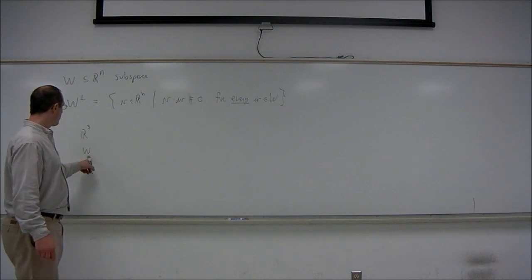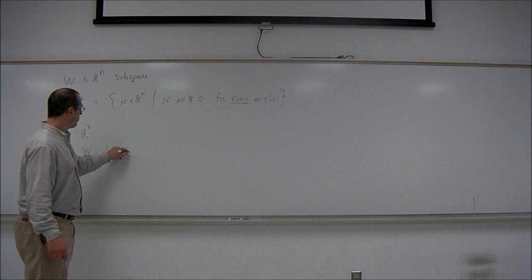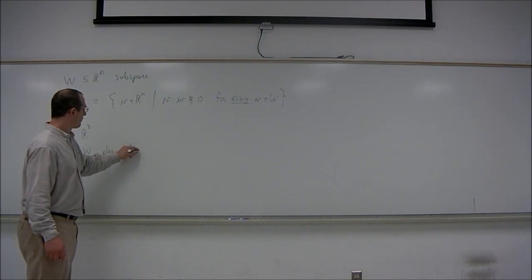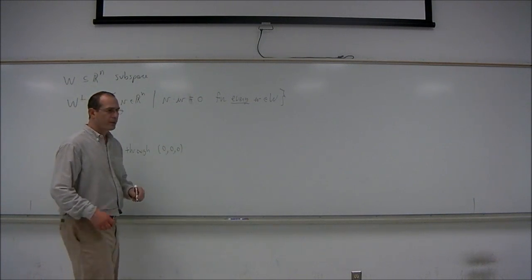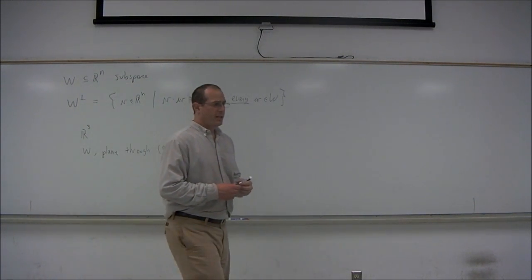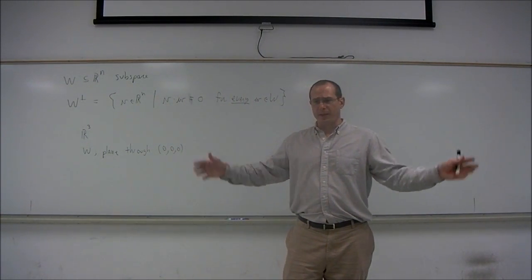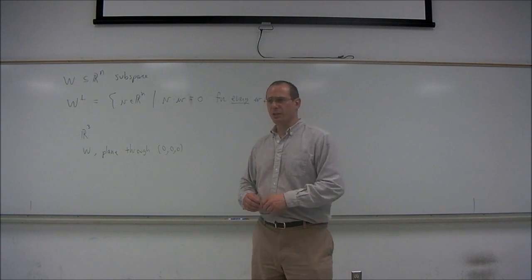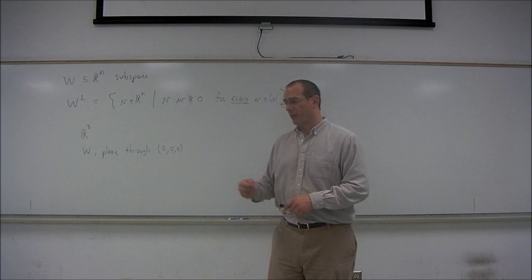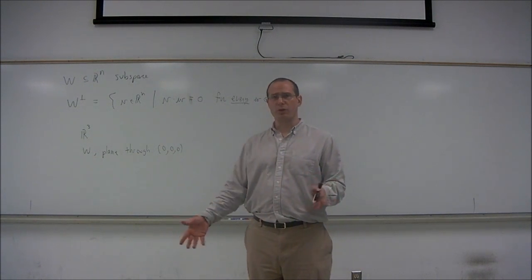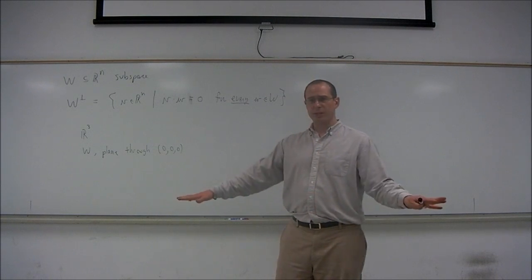A subspace of R^3, one example, could be a plane through the origin. To imagine that, simply think of R^3 as being the space around you, and let the plane through the origin be just the floor. The origin will be some point in the floor that you can choose for yourself, and W will be the floor.